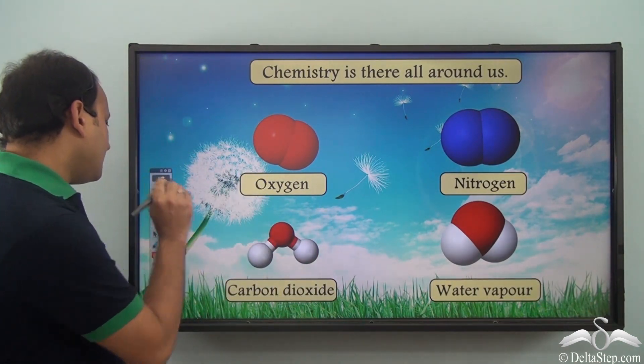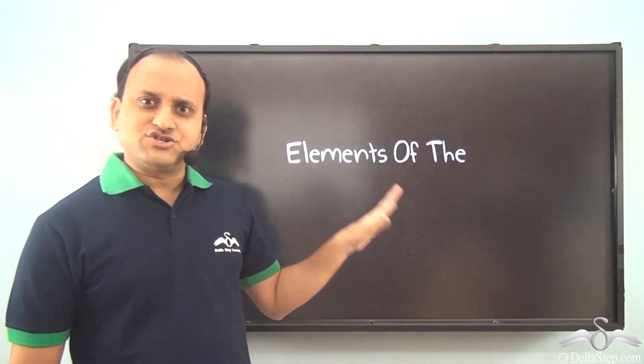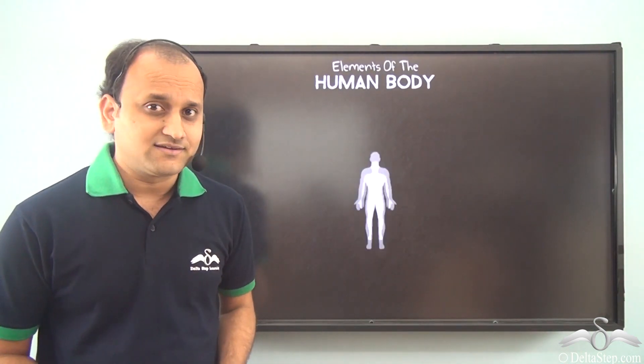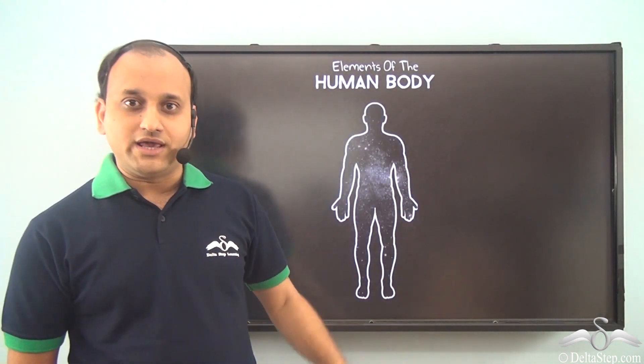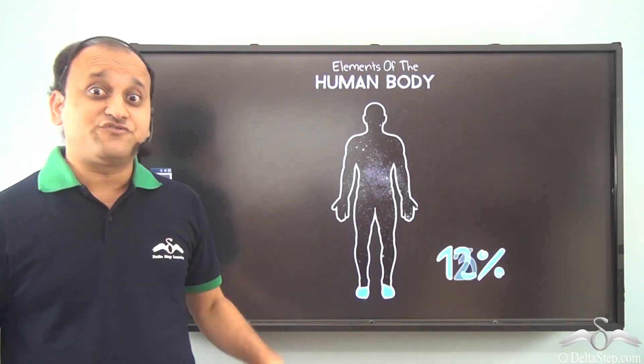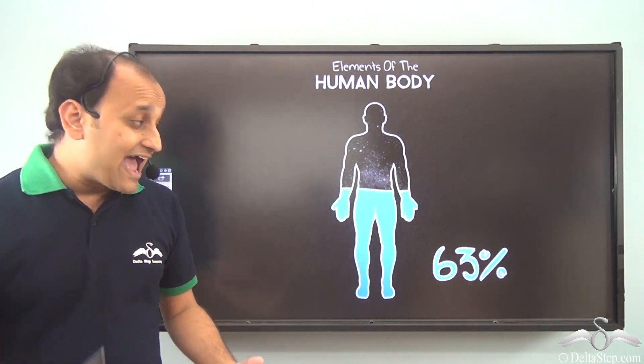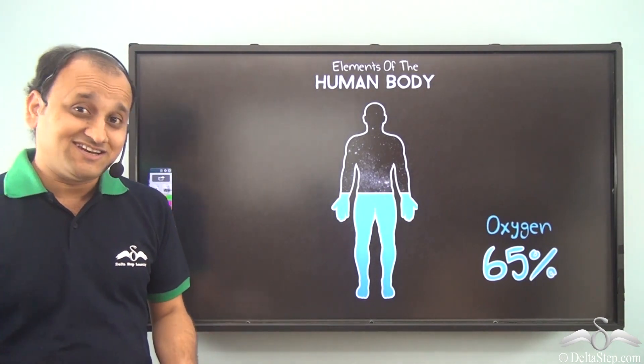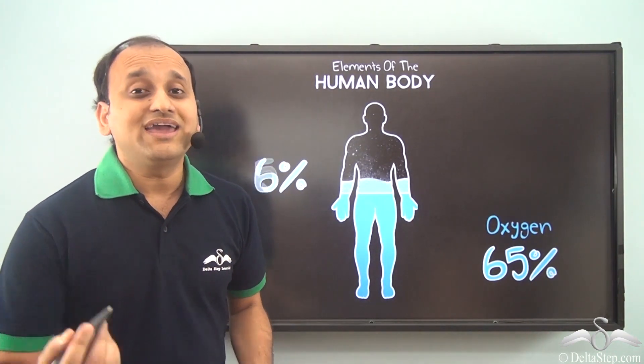Let's see some elements of the human body. What does our body contain? So if we talk about the human body, a major percentage of our body is actually oxygen. Now oxygen again we know is a chemical element.